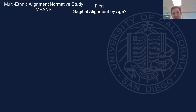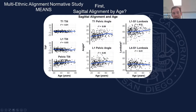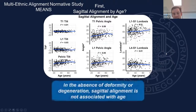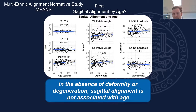I really want to put the nail in the coffin for age-adjusted alignment parameters. Looking at sagittal alignment by age from the MEANS data: T1 tilt has an R-squared of 0.01 over age — it is independent of age. L1 tilt is also independent of age. Pelvic tilt is more variable but also independent of age. T1 pelvic angle, L1 pelvic angle, lordosis — in the absence of degeneration, you still stand normally. Degeneration tends to happen with age, but we're measuring degeneration, not age. People who promote age-adjusted targets are just using age as a proxy for degeneration, which is not fair. In the absence of degeneration, sagittal alignment is not associated with age.